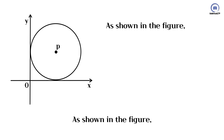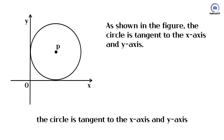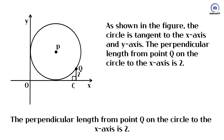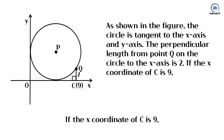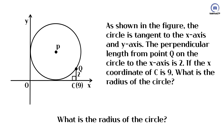As shown in the figure, the circle is tangent to the x-axis and y-axis. The perpendicular length from point Q on the circle to the x-axis is 2. If the x-coordinate of C is 9, what is the radius of the circle?